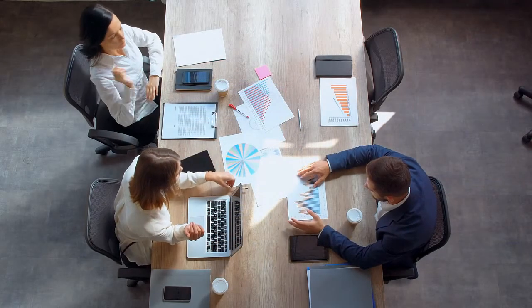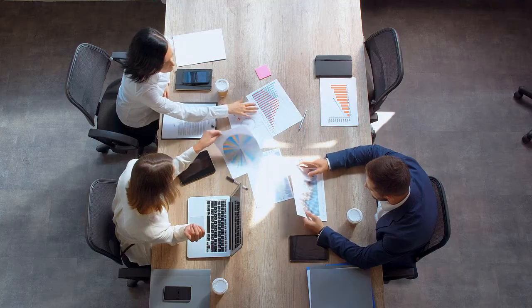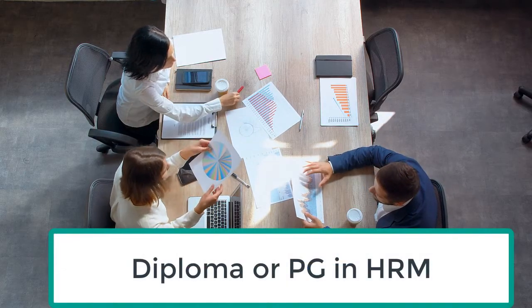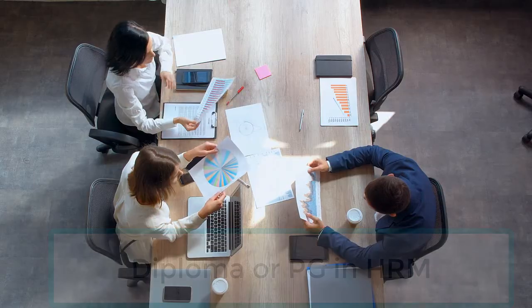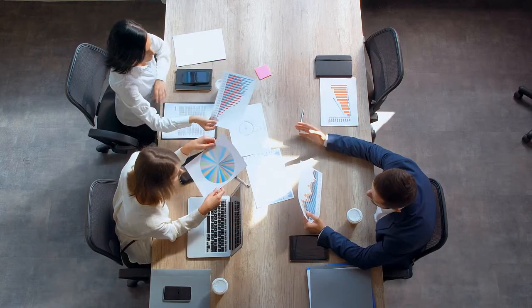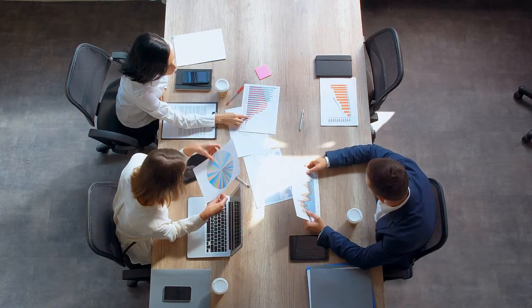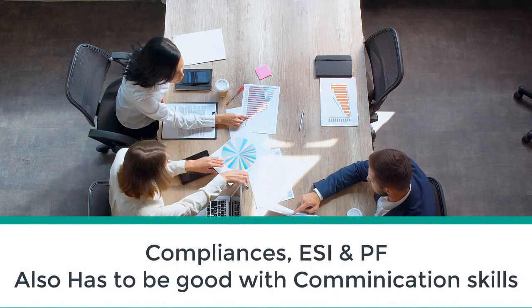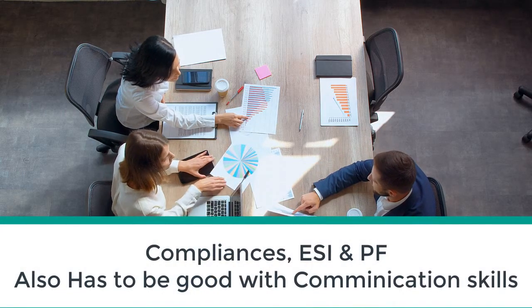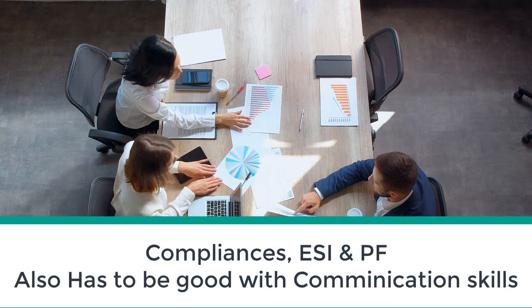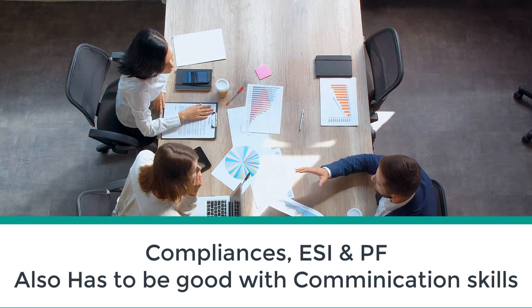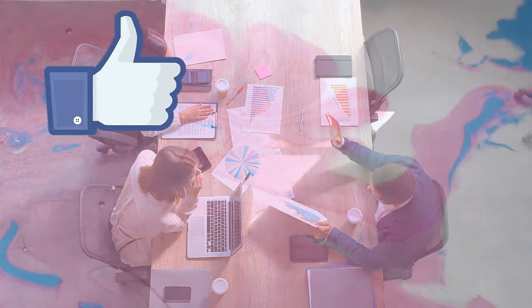For the job specification of the HR manager: the qualification should be a diploma or graduate degree in human resource management. Required skills include knowledge of factory compliances, ESI and PF regulations, good communication skills, computer knowledge, and willingness to travel. That concludes the brief discussion on job analysis of an HR manager and today's video.